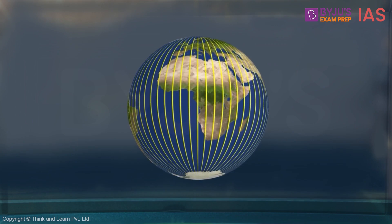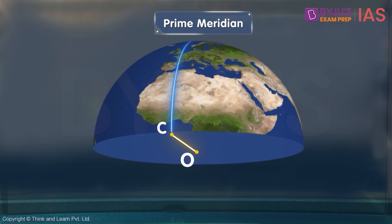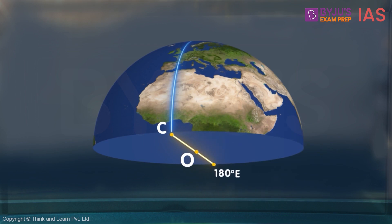Longitudes are also similar in this sense. Suppose this line is the prime meridian. If I move towards the east of this line from C to D, I draw a line from D to O and measure the angle DOC — it is 10 degrees in the east. If I move further, the angle will increase till 180 degrees. This can be done for the western hemisphere as well.